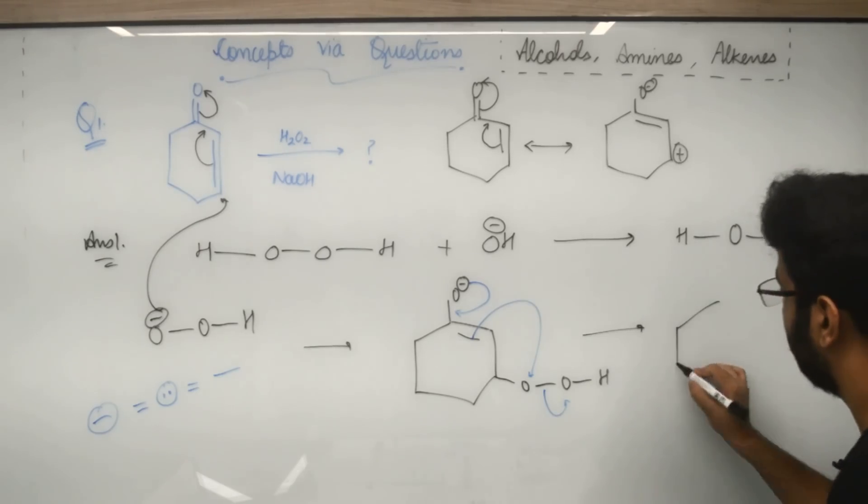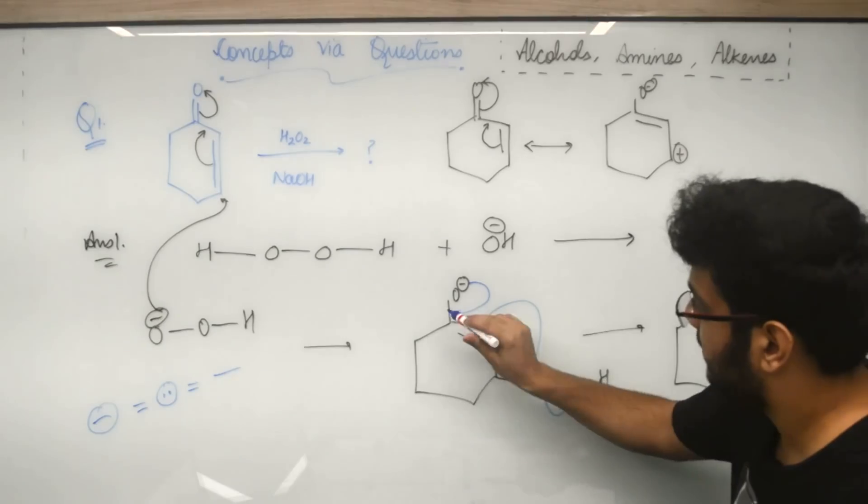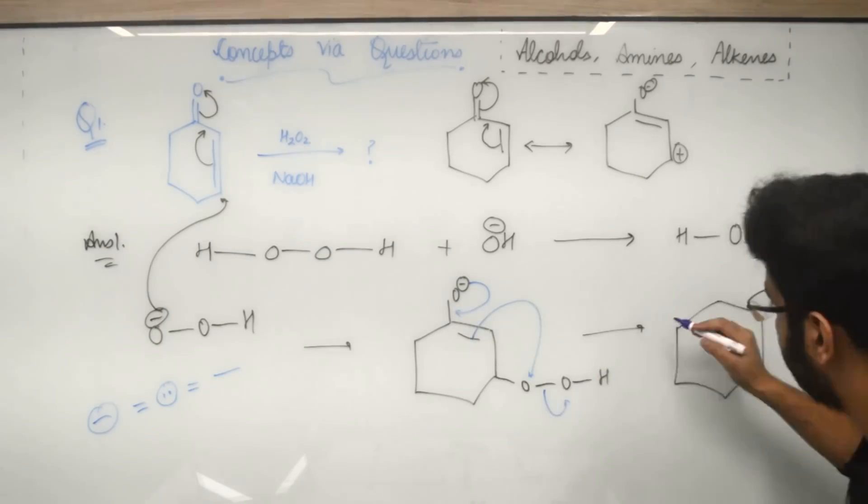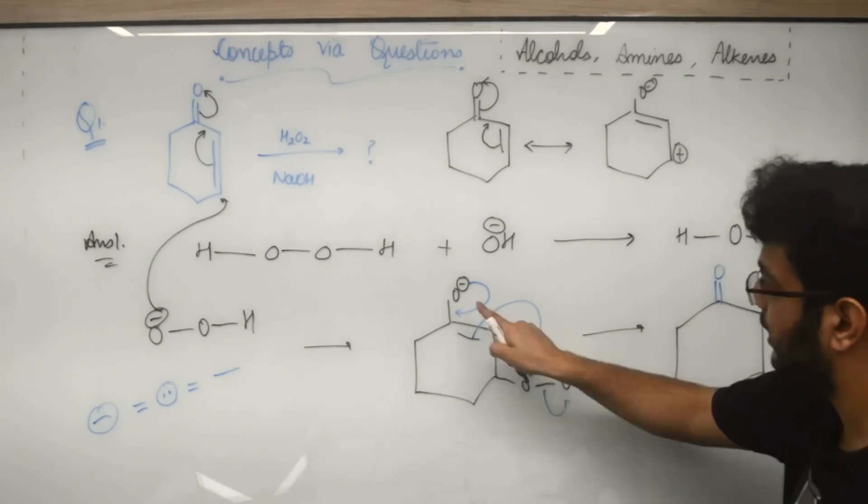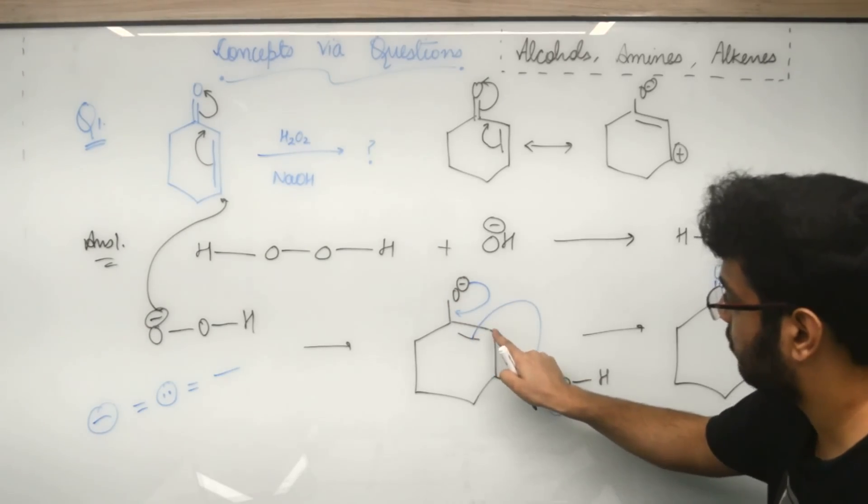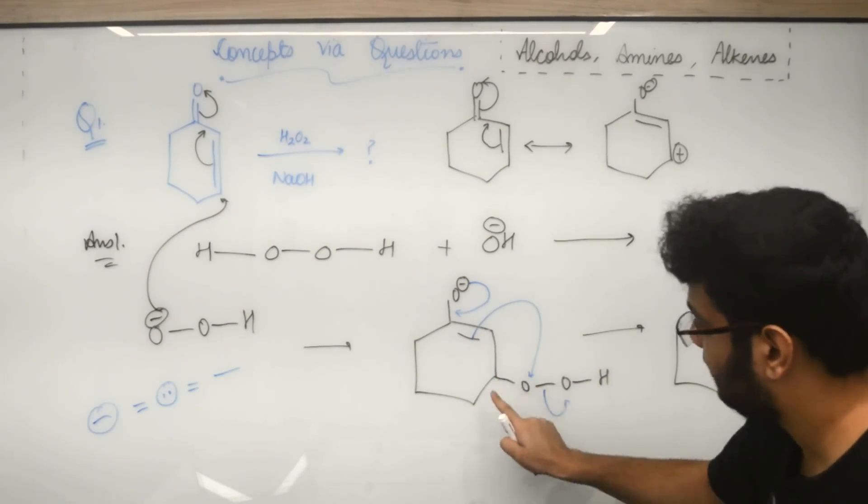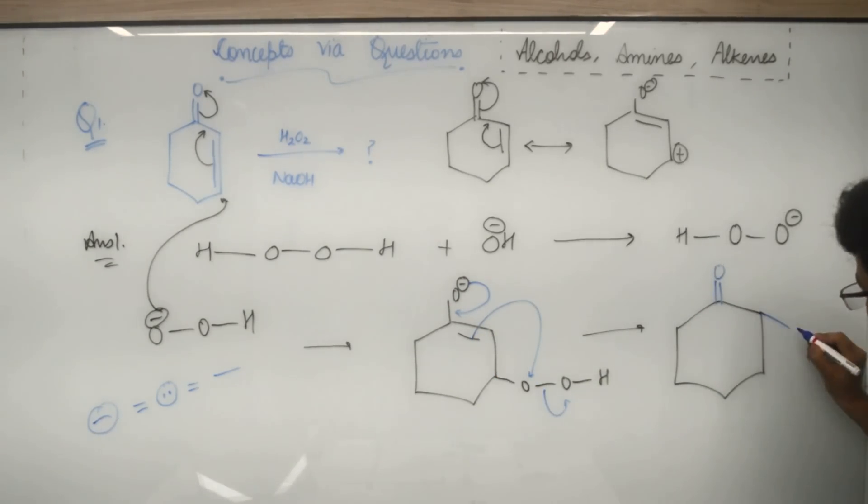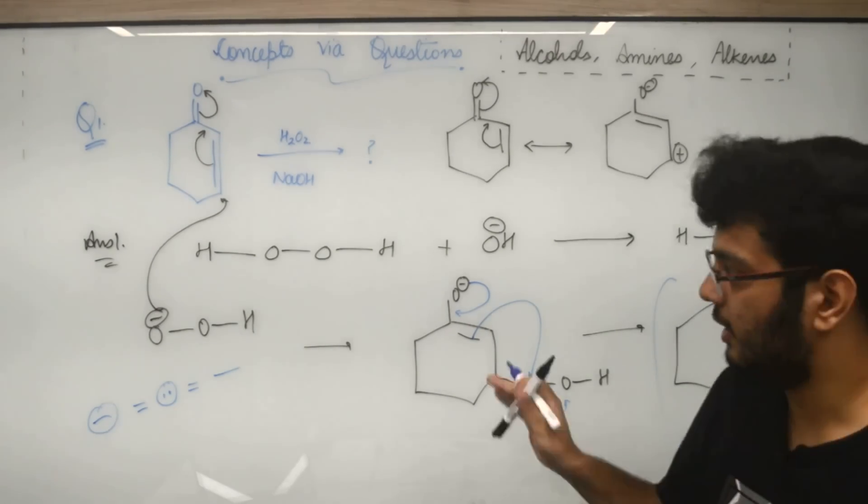Once again, this is formed here. What will happen? Double bond O, double bond O here. This bond has gone to attack this, so here three-membered ring. This will be formed, so this will be the correct answer for this question. Okay, I hope it is clear.